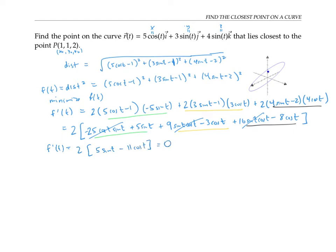If I set that equal to zero, that means that five sine t has to equal 11 cosine t. In other words, sine t over cosine t has to equal 11 fifths. That is, tan t has to equal 11 fifths. Now I could solve for t here — it would have to be tan inverse of 11 fifths, plus multiples of two pi, or tan inverse of 11 fifths plus pi, plus multiples of two pi.